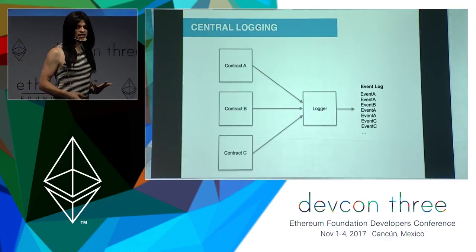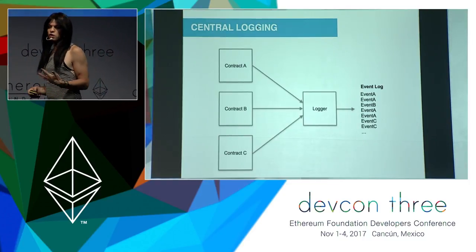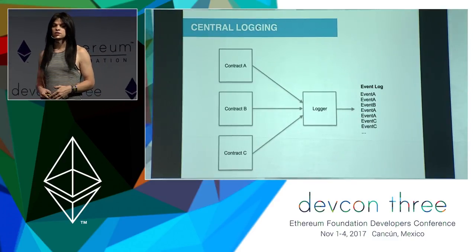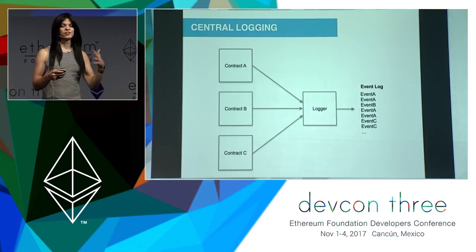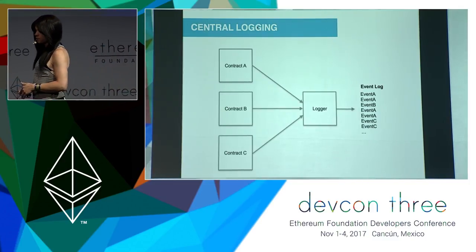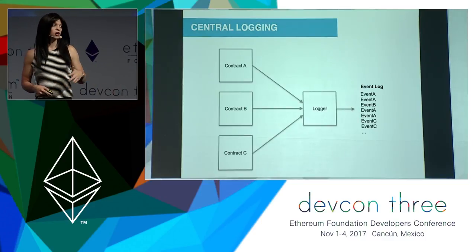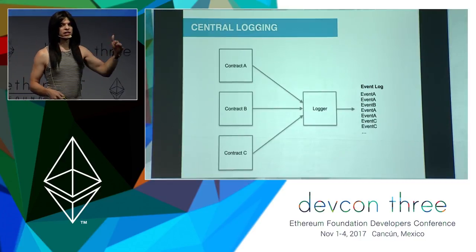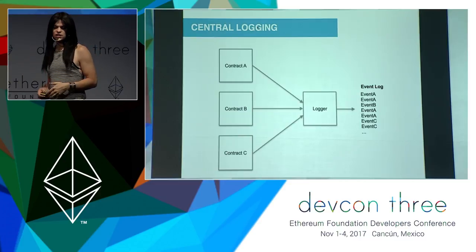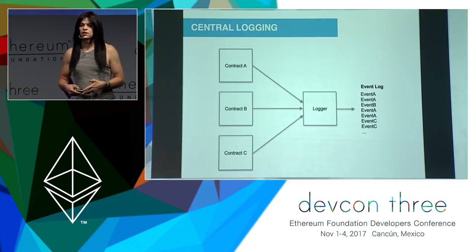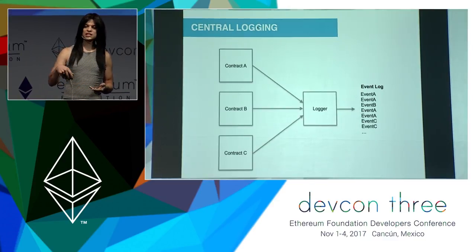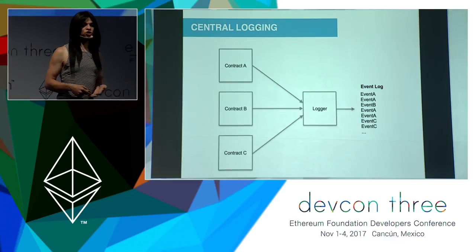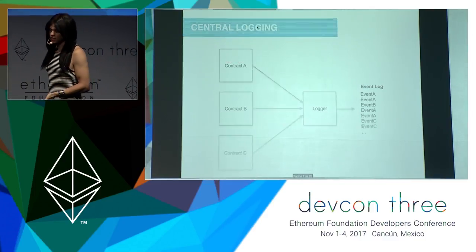In a multi-contract system, logs or events that are fired are really an important way to track what's happening on-chain. All of your off-chain activity is going to be based on different events that are firing. When you are firing events from different contracts, you generally have to monitor those events separately — each contract you're going to be watching. So if you have a multi-contract system, there are actually a lot of benefits to using a single logger contract, where all of those events will fire from the same contract and are easier to monitor.